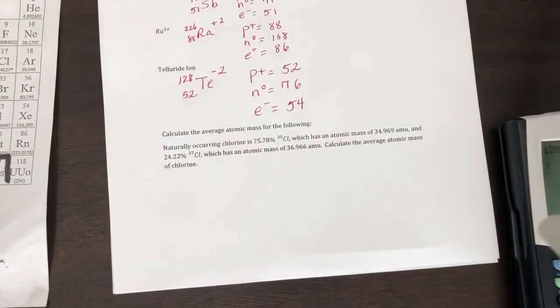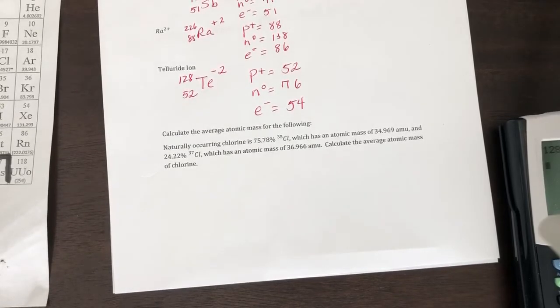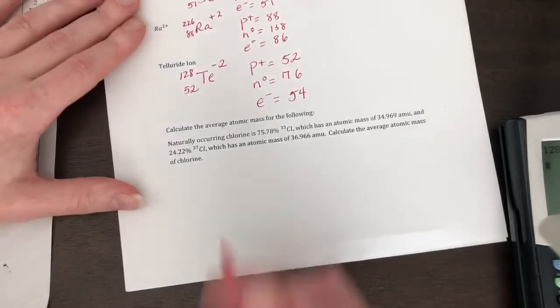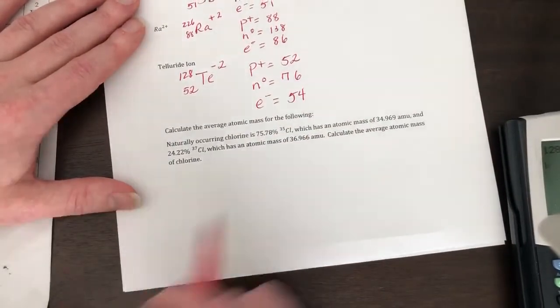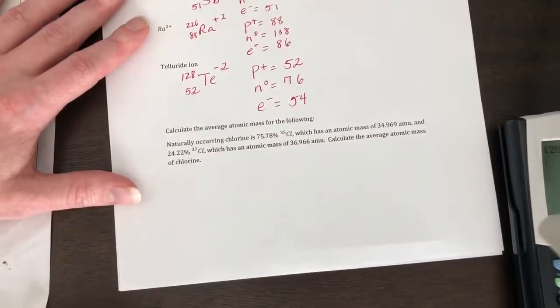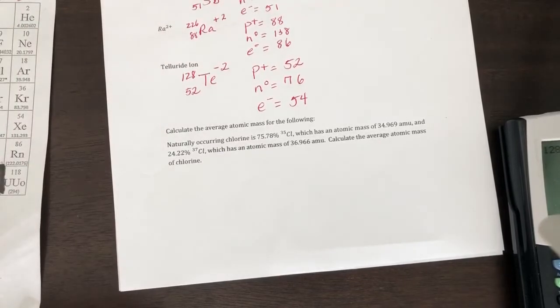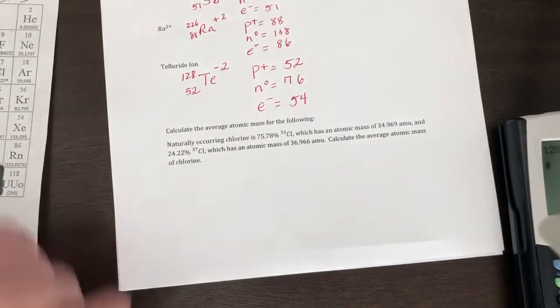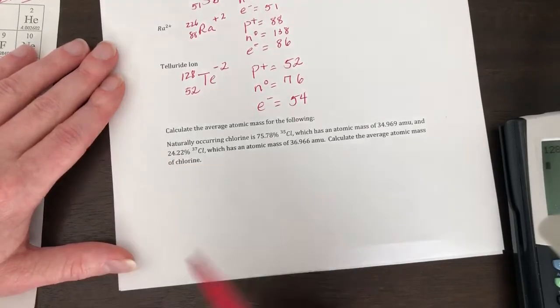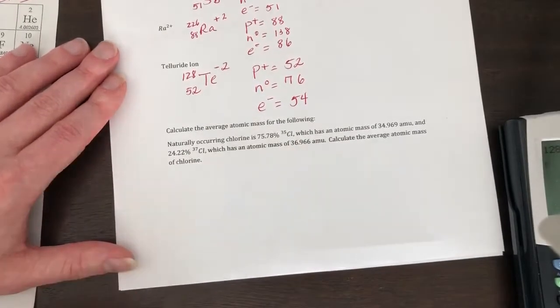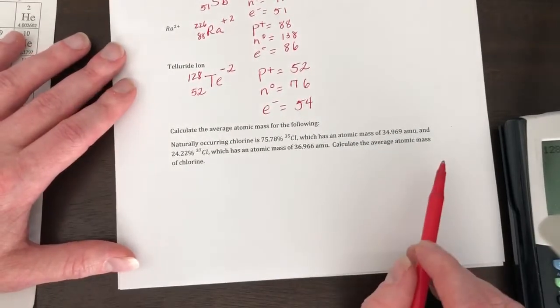Okay, so this says calculate the average atomic mass for the following. So it says naturally occurring chlorine is 35 atomic weight and the percentage is 75.78%. And then you have 24.22% of it occurs at chlorine that has an atomic mass of 37. So this is calculate the average atomic mass.